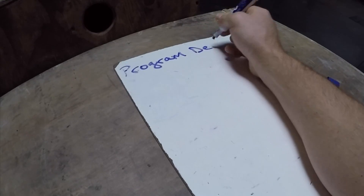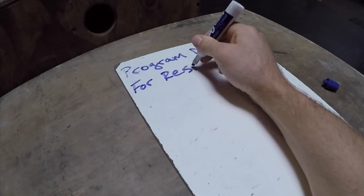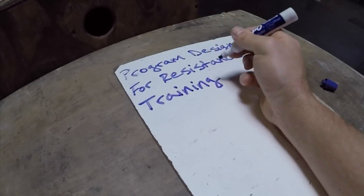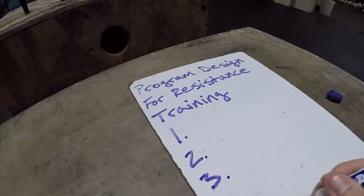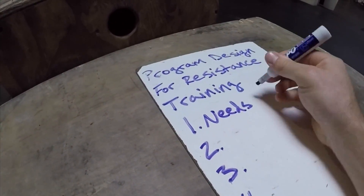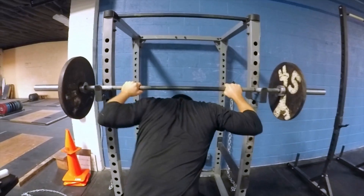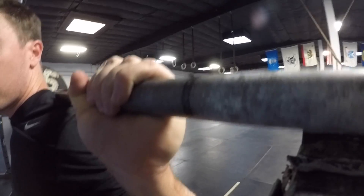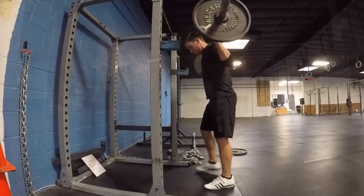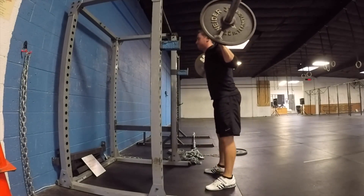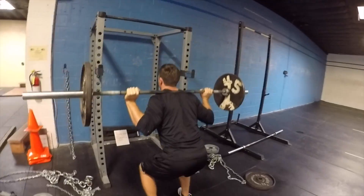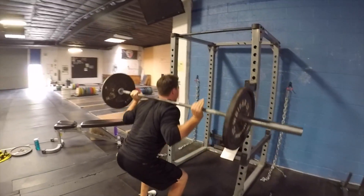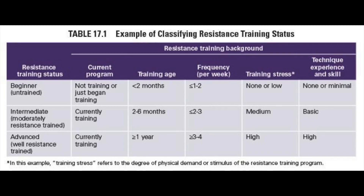Step one: needs analysis. This is where you assess the sport the athlete needs to get better at and create a training regimen from that, as well as assess the athlete to see what improvements they need to make. An athlete may be a beginner having trained about one to two days per week, intermediate having trained two to three days a week, or advanced having trained greater than three to four days per week.